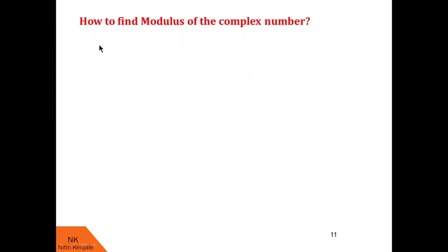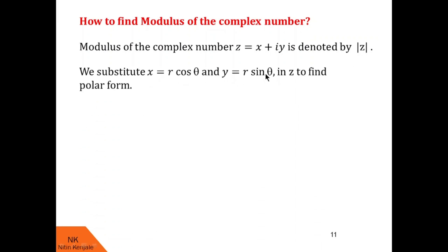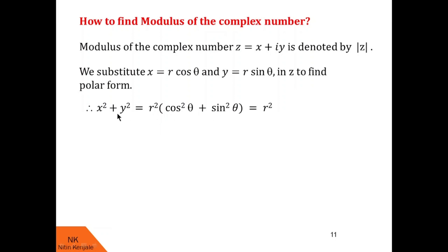Now let us see how to find the modulus of the complex number. We will derive a formula for r in terms of x and y. Modulus of z equal to x plus iy is denoted by mod of z. Since we substitute x equal to r cos theta and y equal to r sin theta in z, to find r in terms of x and y, let us calculate x square plus y square. x square plus y square equals r squared cos squared theta plus r squared sin squared theta. Taking r squared as common, we are left with cos squared theta plus sin squared theta, which is 1. So x square plus y square equals r squared, giving r equal to root of x squared plus y squared. Since r is a length it cannot be negative, so modulus of z is root of x squared plus y squared.